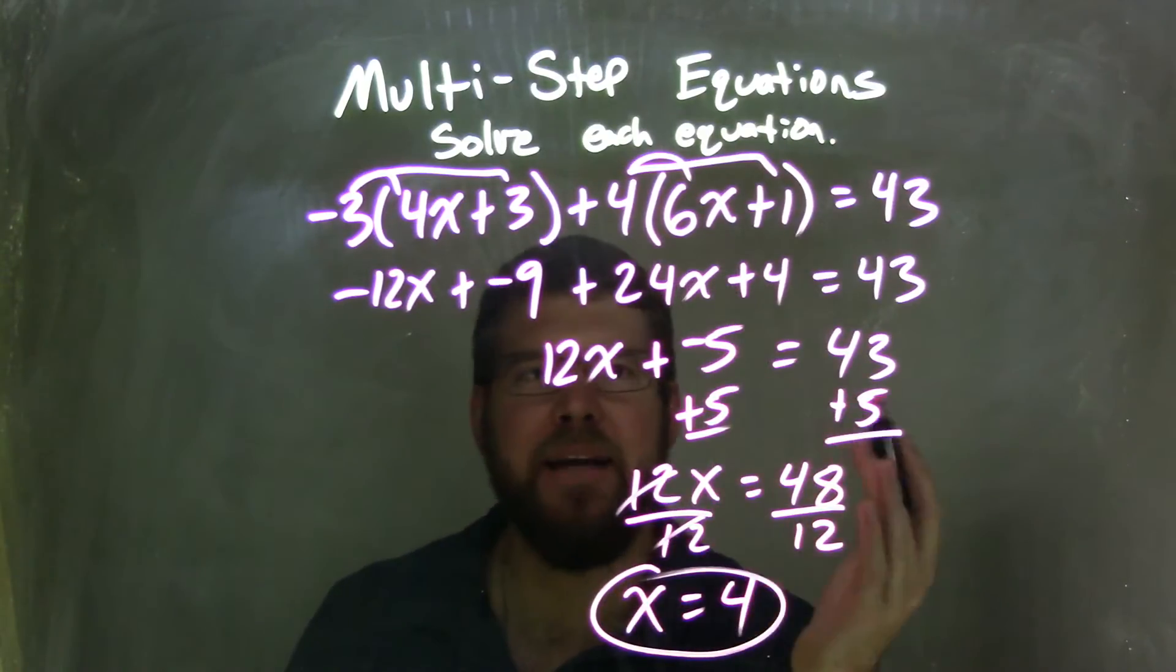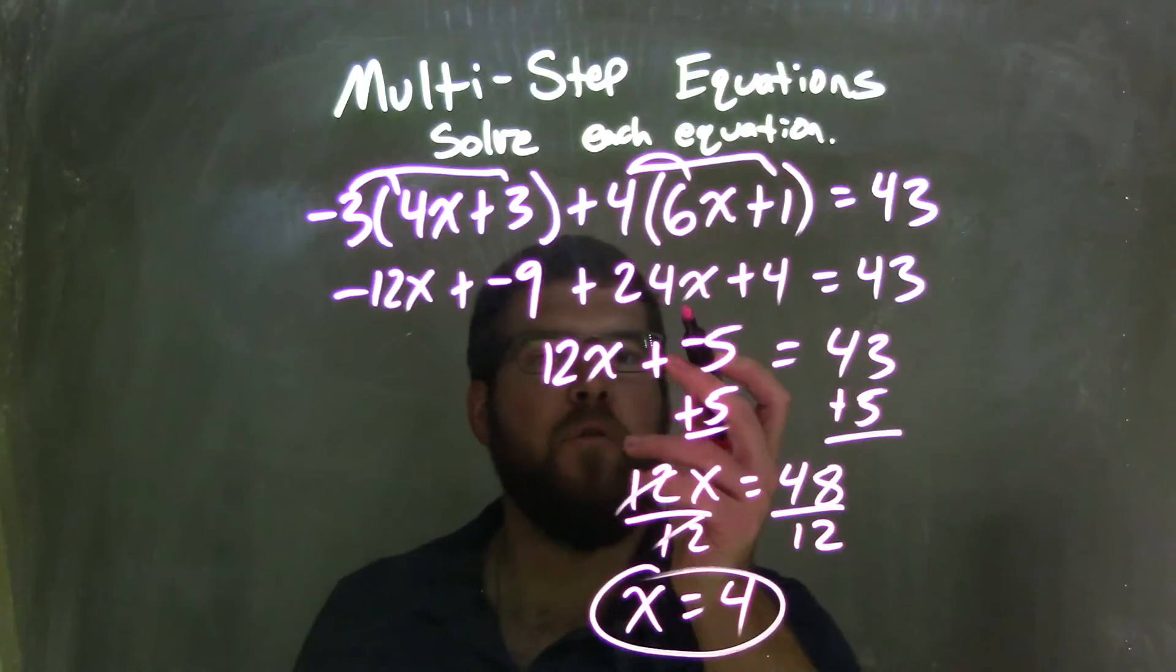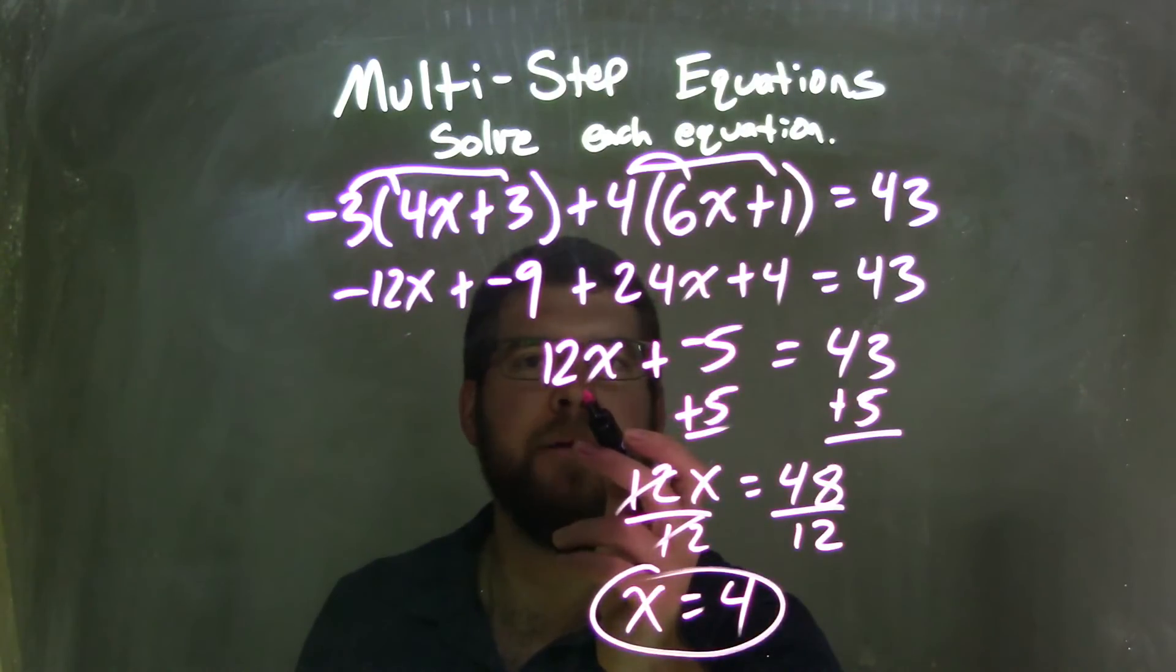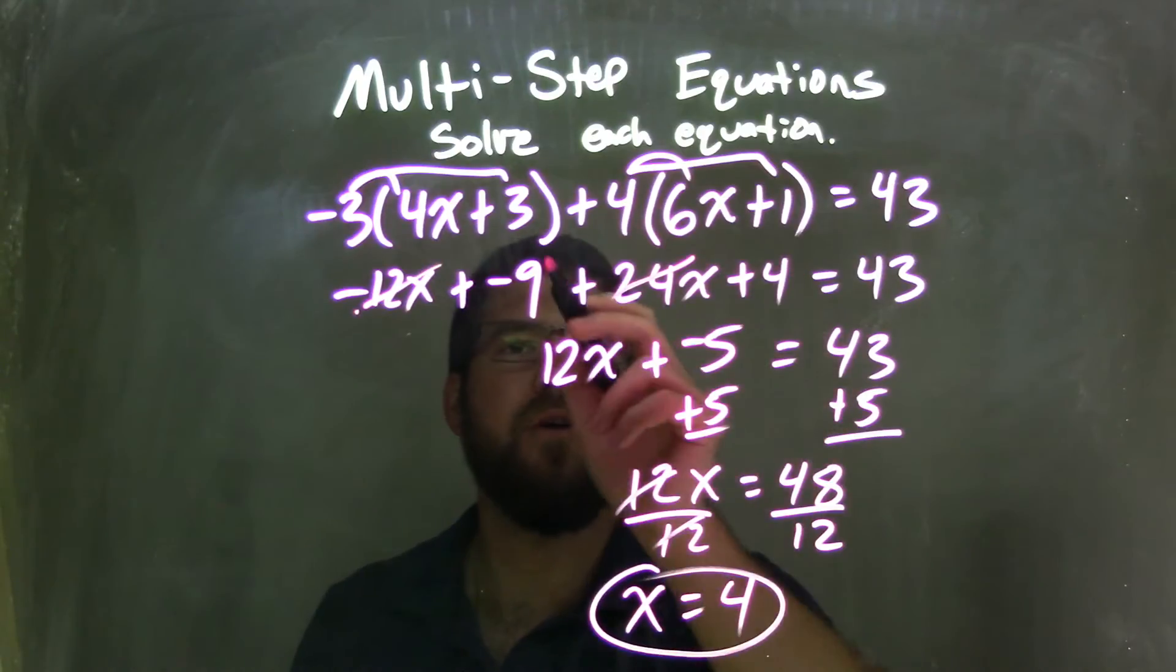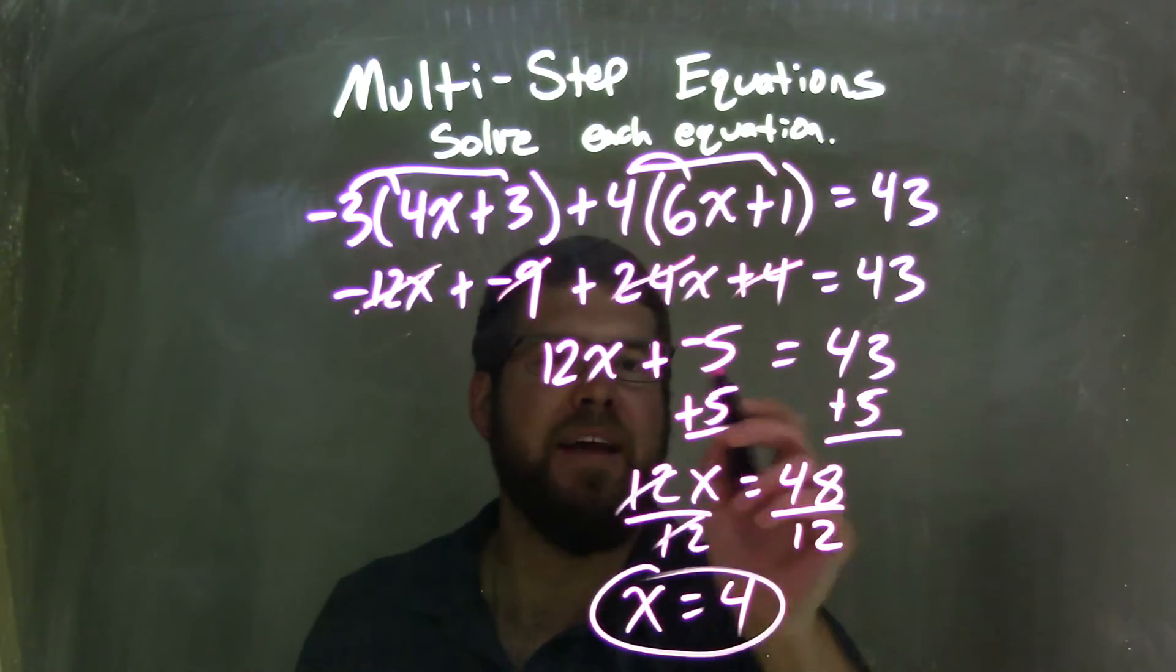Now I've combined my like terms on the left. Negative 12x plus 24x is that 12x right here. Negative 9 plus 4 is negative 5.